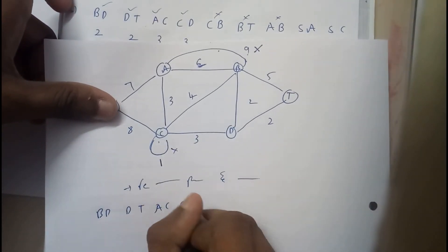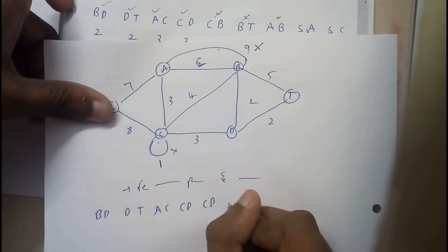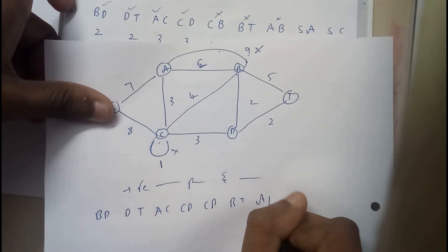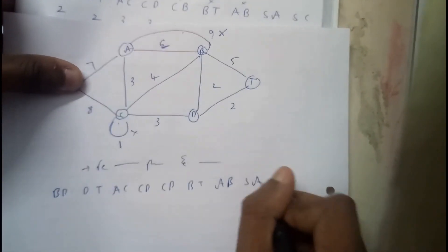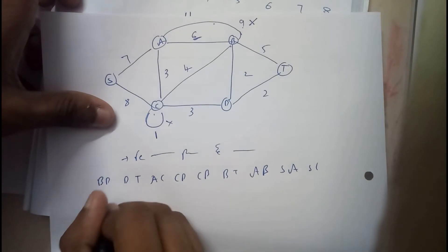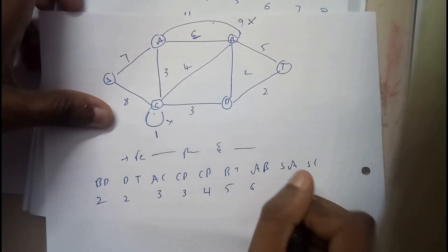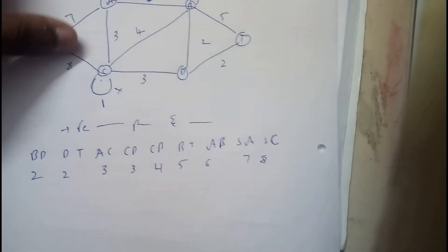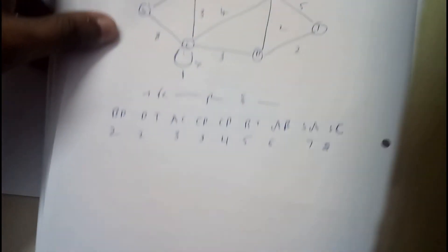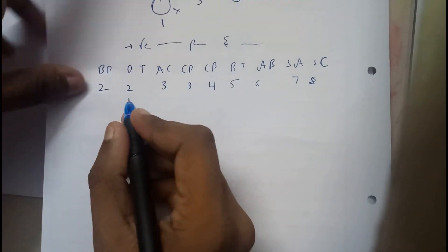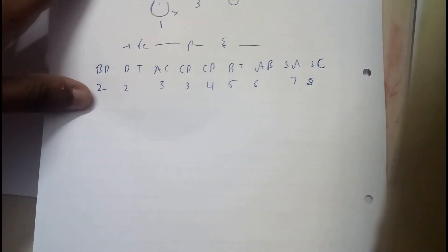This is a parallel edge. This is a self loop. So whenever you will be coming across these things, here you need to check. This cost is less than this, so we will be removing this as we need to find the minimum cost. So again, this is a self loop. You need to neglect the self loop directly. Edges: BD, DD, AC, CD, CB, BT, AB, SA. Costs: 2, 2, 3, 3, 4, 5, 6, 7, 8. You completed the table.